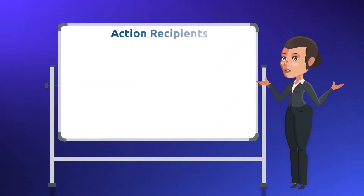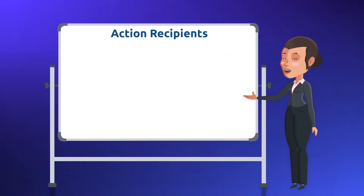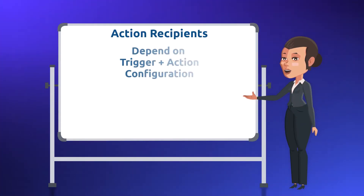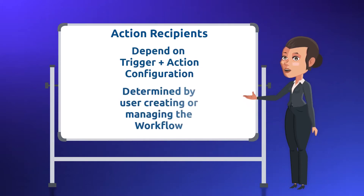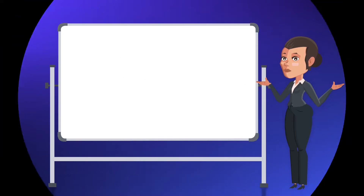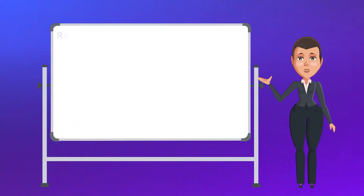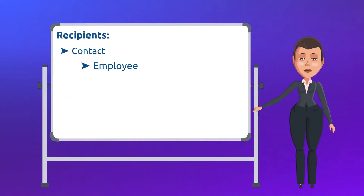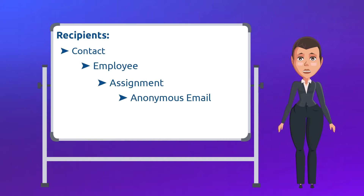The recipients for the above noted actions will depend on the selection of the trigger and action configuration, which will be determined by the user creating or managing the workflow. The five recipient choices are contact, employee, assignment, anonymous email, or anonymous phone for texts.